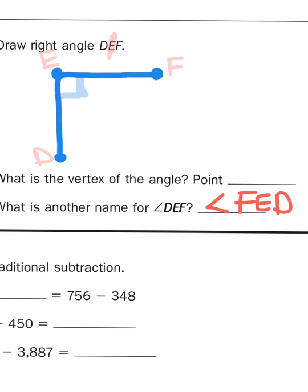Because I could start here and follow the path of the letters this way, DEF. Or I could start at F and follow the path of the points the other way. And, of course, the vertex is always going to be E.